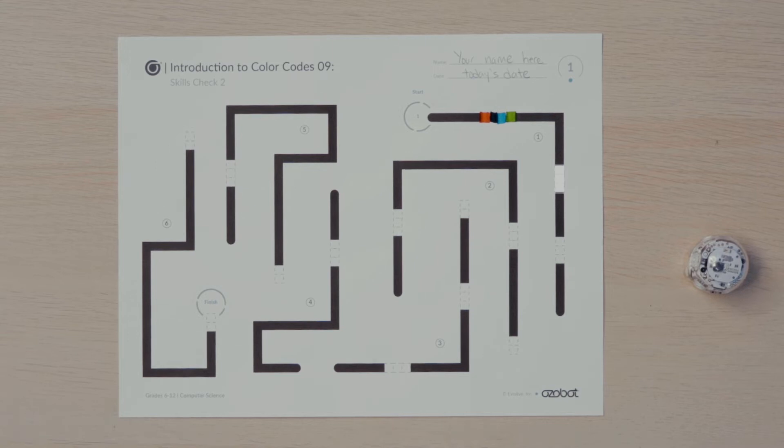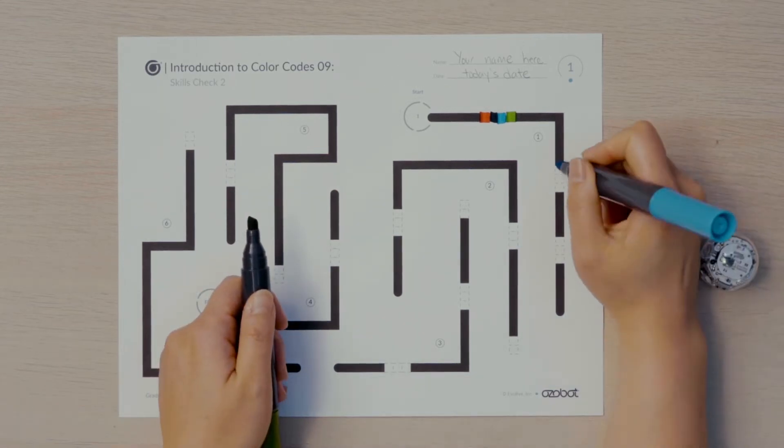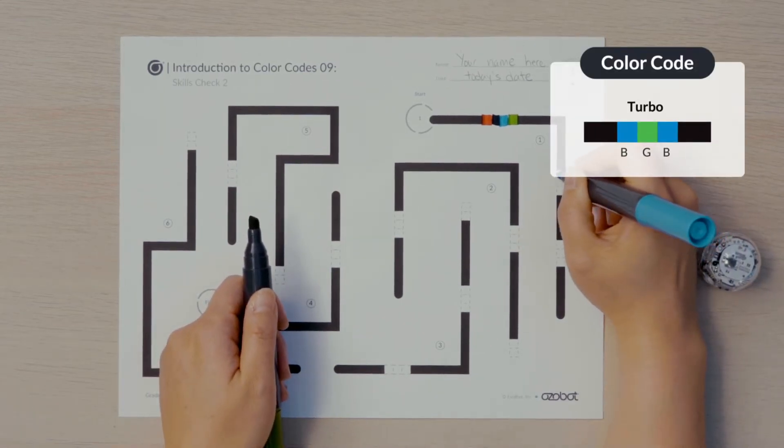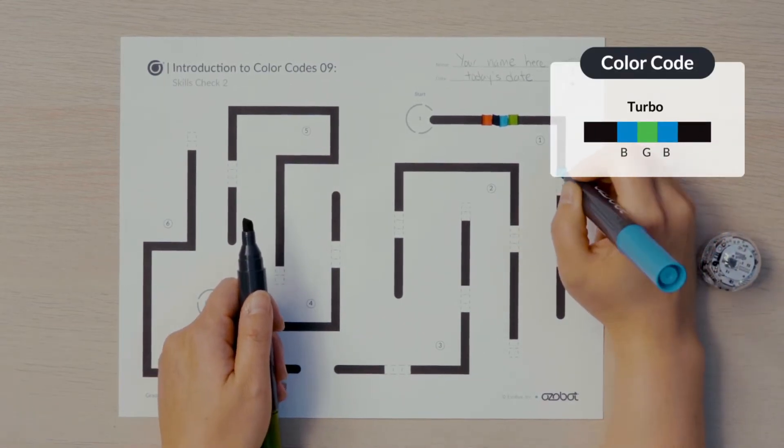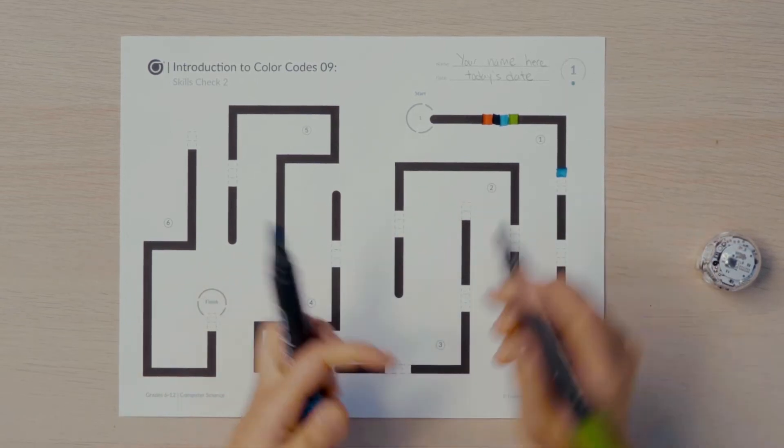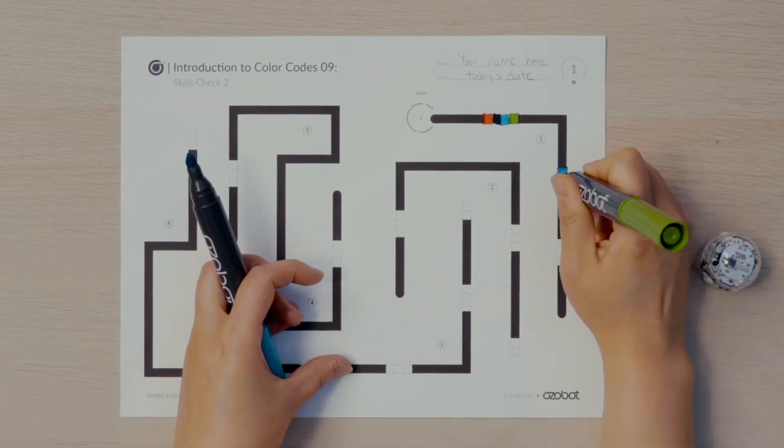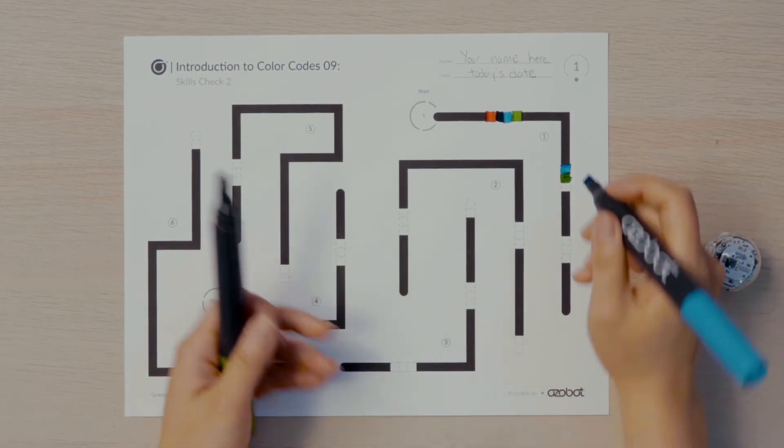Continuing on the line, there is a three block space for another color code to set the speed of your bot. I'll add a turbo code, which is blue, green, blue. You can choose a different speed code from the color codes chart. Just remember your bot has only 30 seconds to get to the finish.